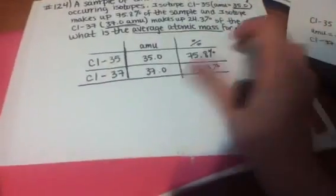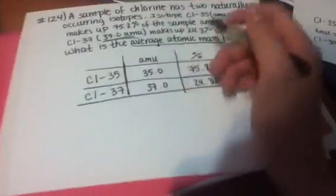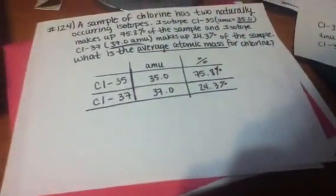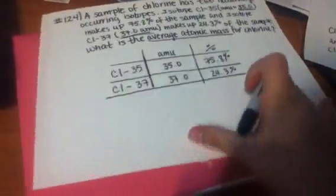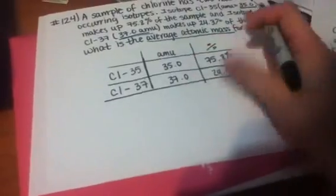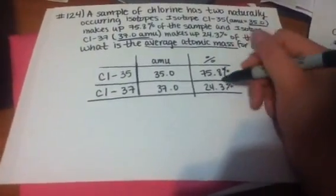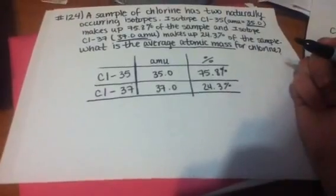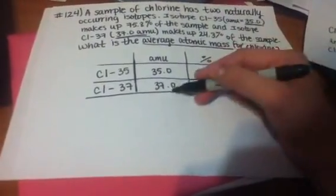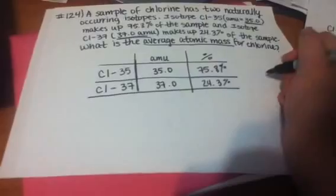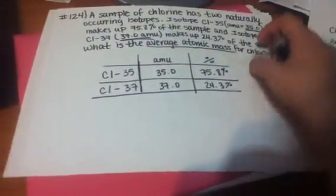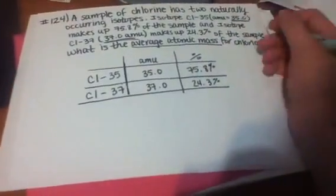So now I want to find the total, the average atomic mass for chlorine. What we want to do is convert our percentage to decimal, in order for us to multiply decimal times decimal. And that would give us an answer in decimal, giving us a total number of mass.